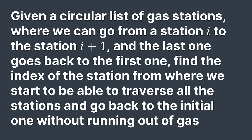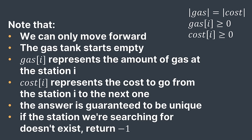Welcome back. In this lecture, we will solve the gas station problem. We're given a circular list of gas stations where we can go from station i to station i+1, and the last one goes back to the first. We must find the index of the station from where we can traverse all stations and go back to the initial one without running out of gas. We can only move forward, the gas tank starts empty. gas[i] is the amount of gas at station i, cost[i] is the cost to go from station i to the next. The answer is guaranteed unique — return -1 if no such station exists.